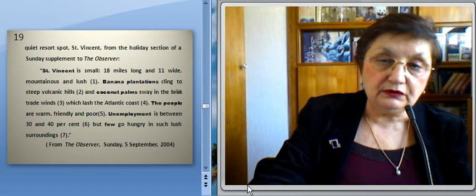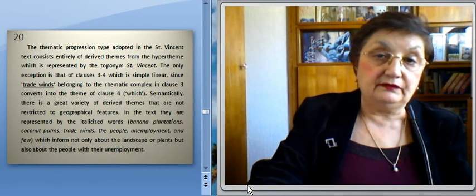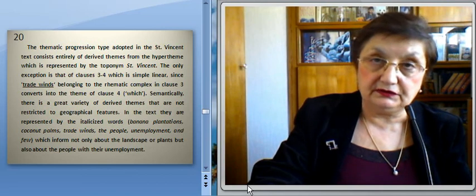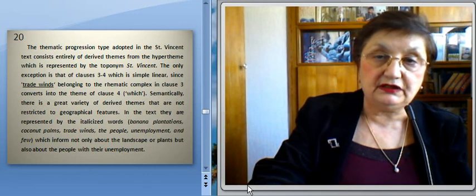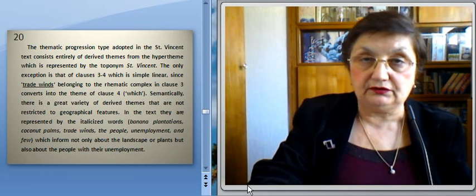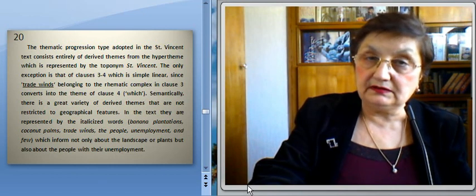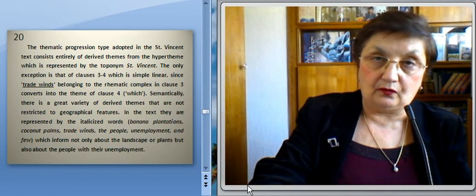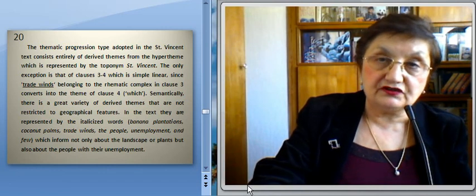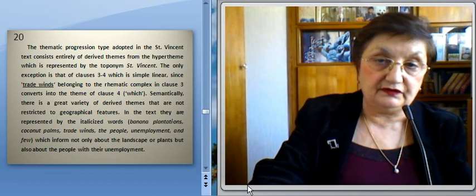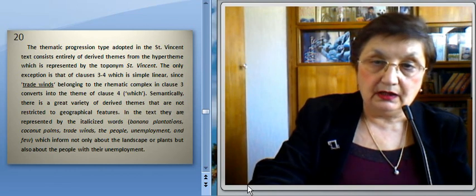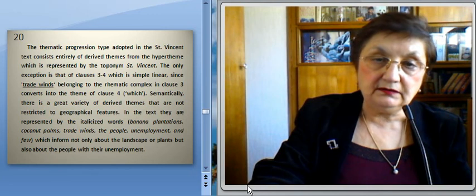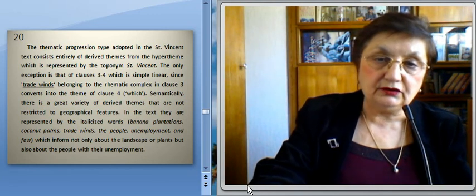The semantic progression type adopted in the St. Vincent text consists entirely of derived themes from the hyper-theme, which is represented by the toponym St. Vincent. The only exception is that of clauses three and four, which is simple linear, since 'trade winds' belonging to the rhematic complex in clause three converts into the theme of clause four, represented lexically by 'which.' Semantically, there is a great variety of derived themes that are not restricted to geographical features. In the text, they are represented by the italicized words: banana plantations, coconut palms, trade winds, the people, unemployment, and the view — informing not only about the landscape and plants, but also about the people and their unemployment.